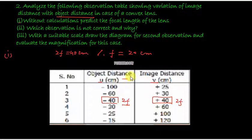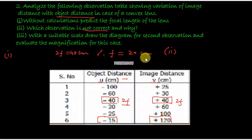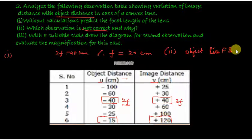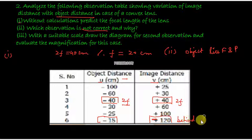The second part asks which observation is not correct and why. Looking at observation 6, it states the object distance is minus 15 and the image distance is plus 120. An object distance of minus 15 is less than the focal length of 20 centimetres, meaning the object lies between the focus and the pole. In that case, the image formed is virtual, erect, and enlarged on the same side as the object, so the image distance sign should be negative. The value plus 120 implies the image is behind the mirror, which is not possible for this object position. Therefore, observation 6 is incorrect.